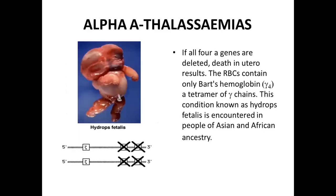The fourth type of alpha thalassemia is Hydrops Fetalis. All four alpha globin genes are deleted or mutant, resulting in no synthesis of alpha chains. This leads to increased production of gamma chains, which form tetramers of gamma chains (Hemoglobin Bart's). This condition is encountered in people of Asian, African, and Mediterranean ancestry. These patients die during intrauterine life and do not have an extra-uterine life.